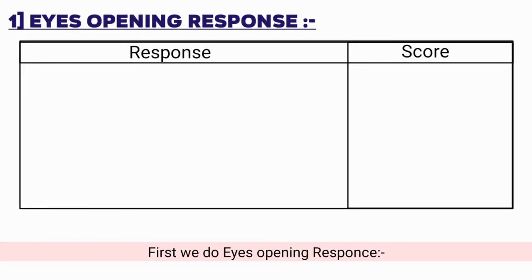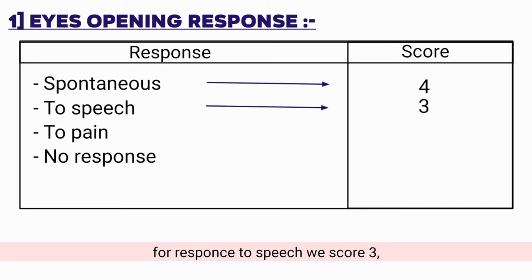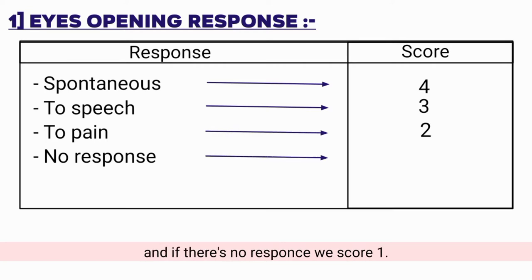First, we assess the eye-opening response. For spontaneous response, we score 4. For response to speech, we score 3. For response to pain, we score 2. And if there is no response, we score 1.